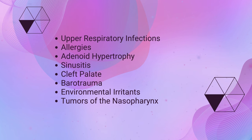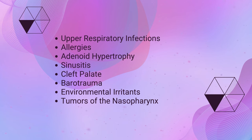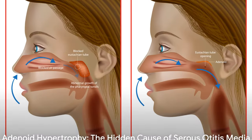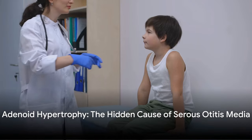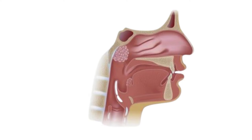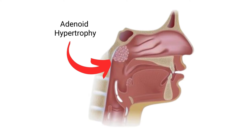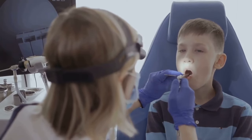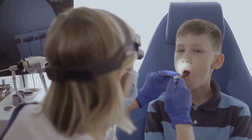Additionally, adenoid hypertrophy — or enlarged adenoids — can physically obstruct the tube. Exposure to tobacco smoke is another culprit, as it can irritate the tube's lining. Adenoid hypertrophy, an abnormal enlargement of the adenoids, is a common condition in children that can lead to otitis media with effusion. Adenoids, also known as pharyngeal tonsils, are small pads of lymphatic tissue located at the back of the nasopharynx, where the nose blends into the throat.